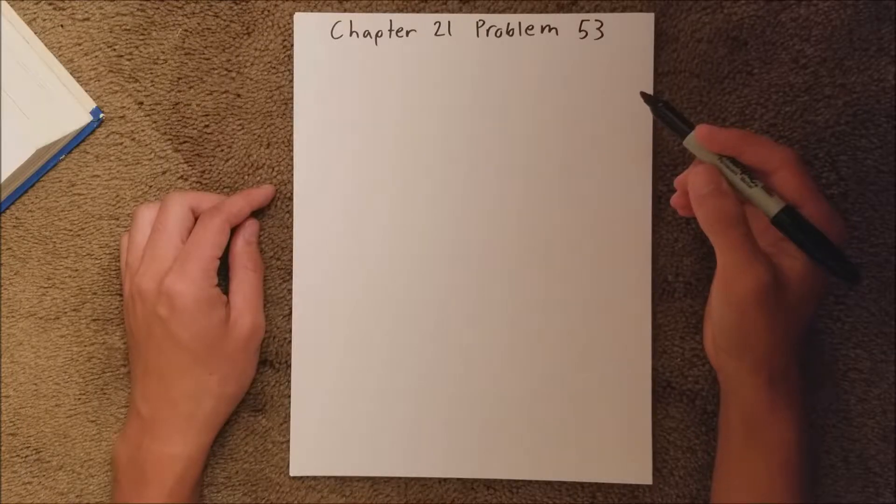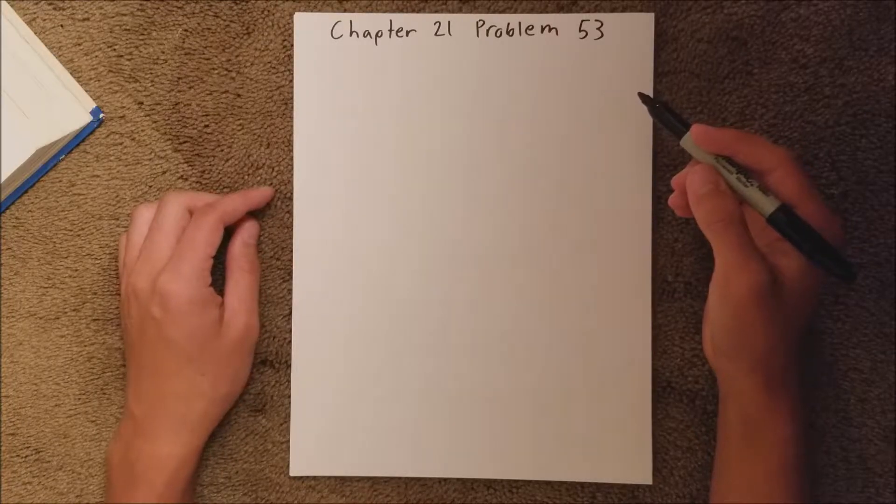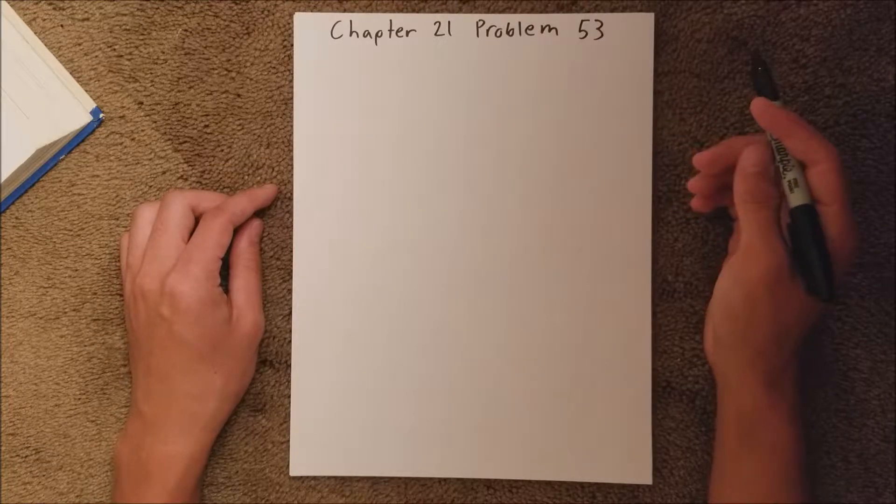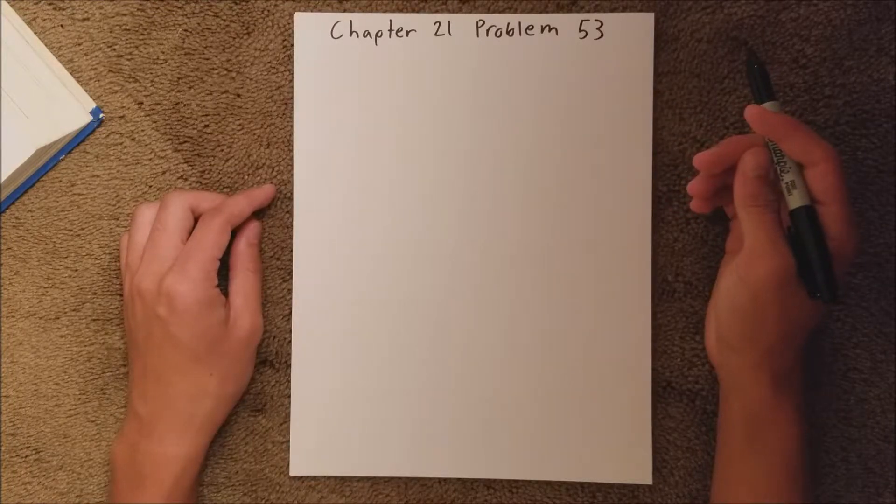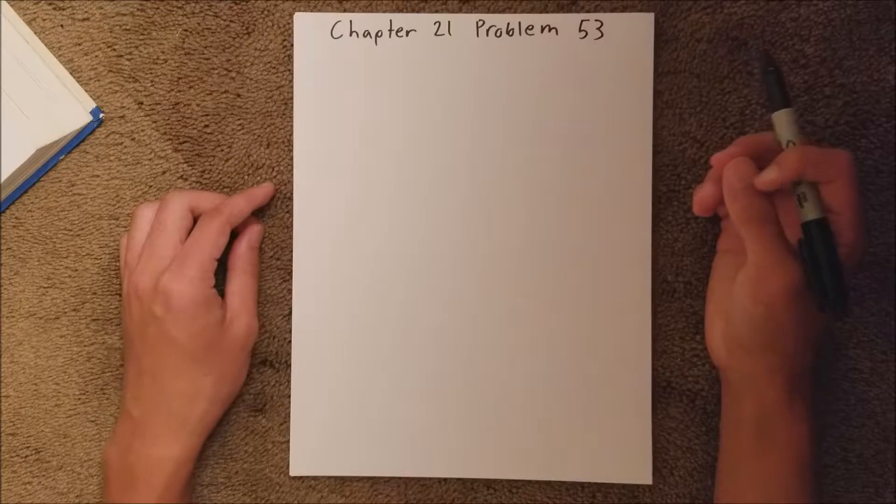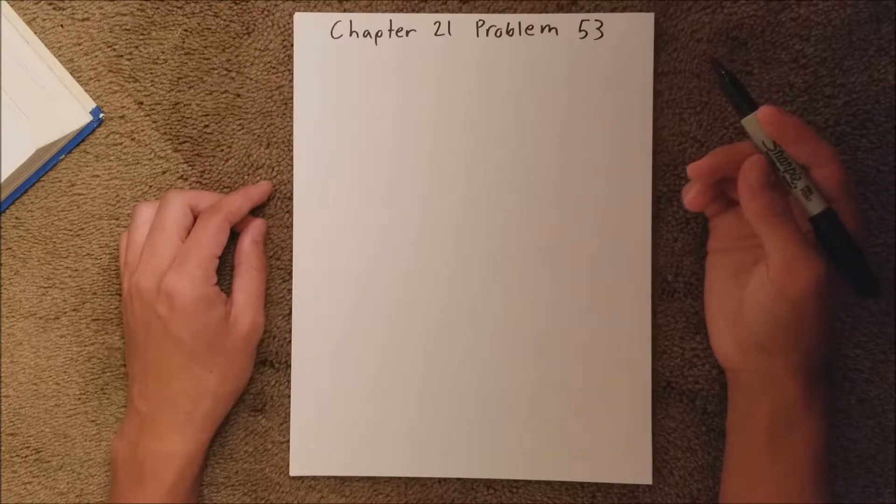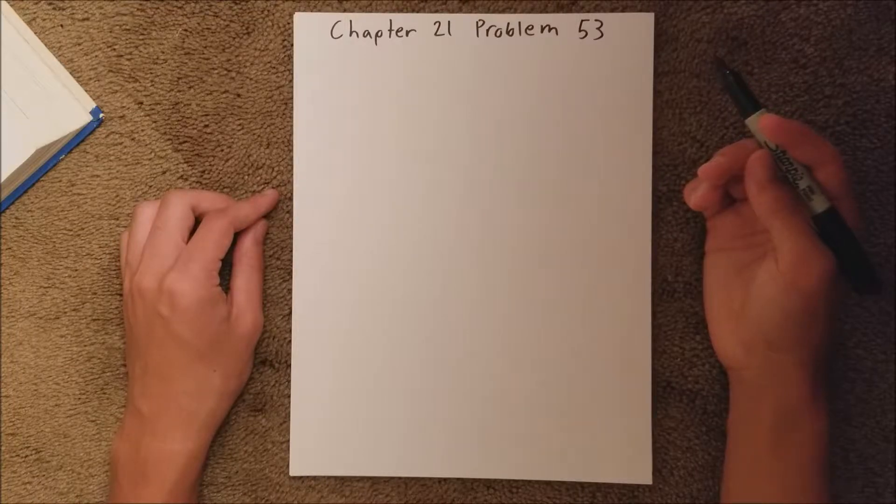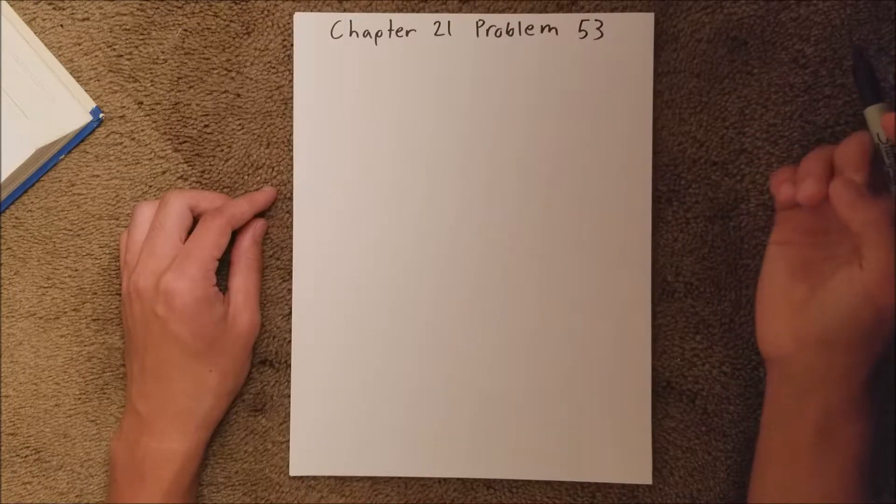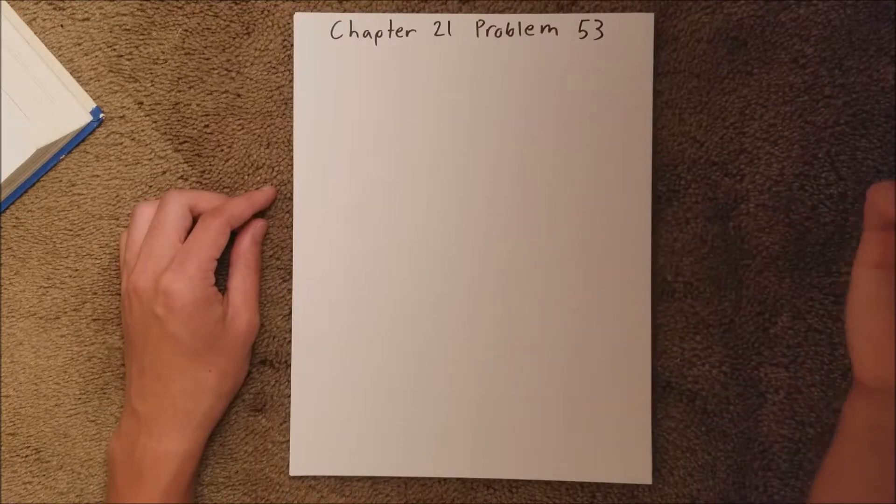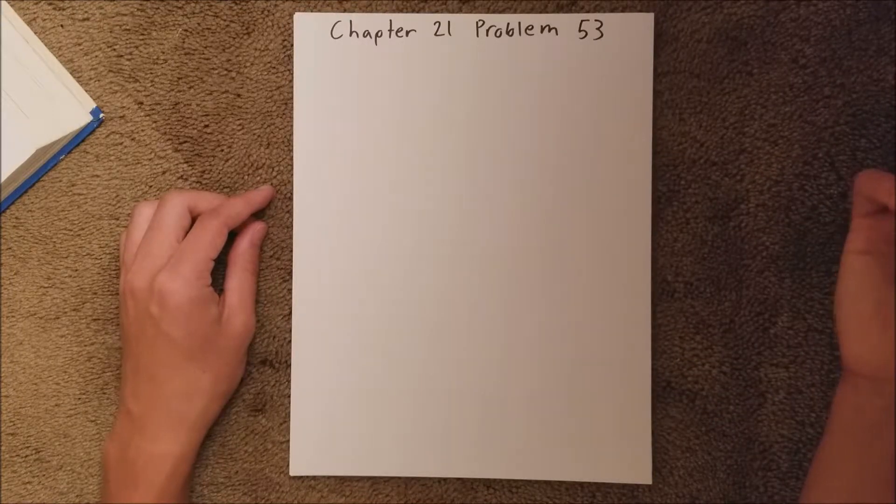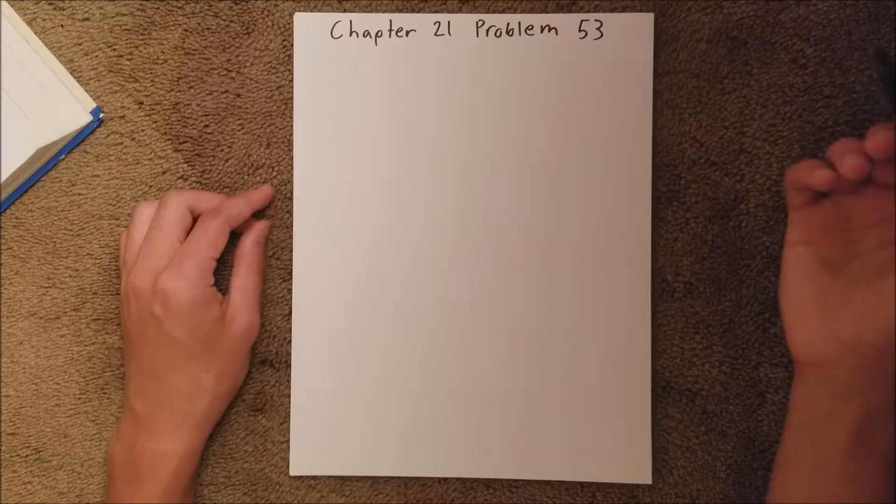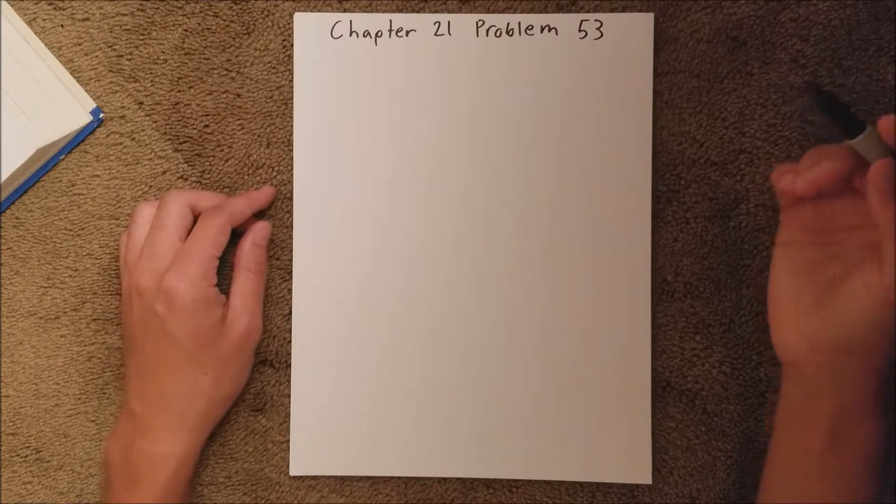Chapter 21 is all about electric charge, and number 53, it wants to know, in order to neutralize the gravitational attraction, what equal charges would have to be on the Earth and the Moon? So what equal charge would neutralize their gravitational force? That's Part A.